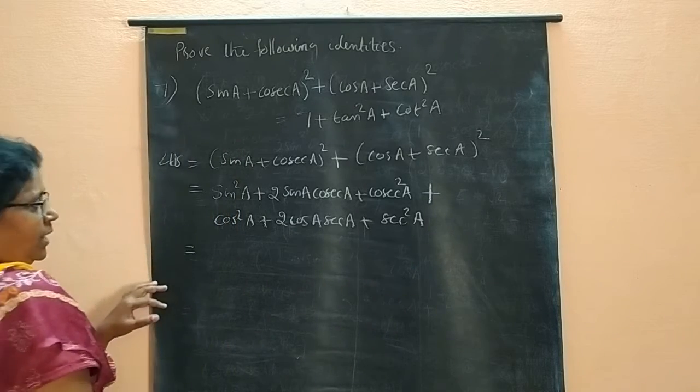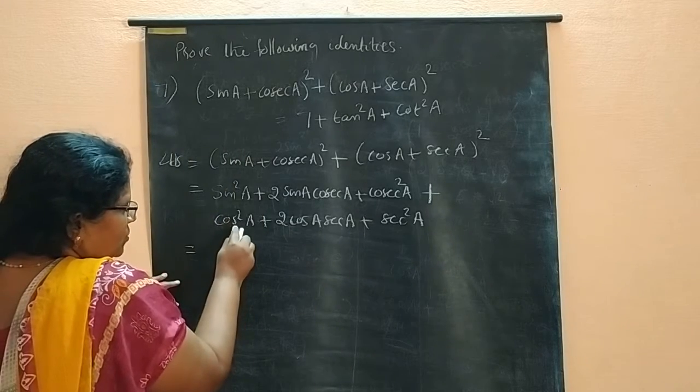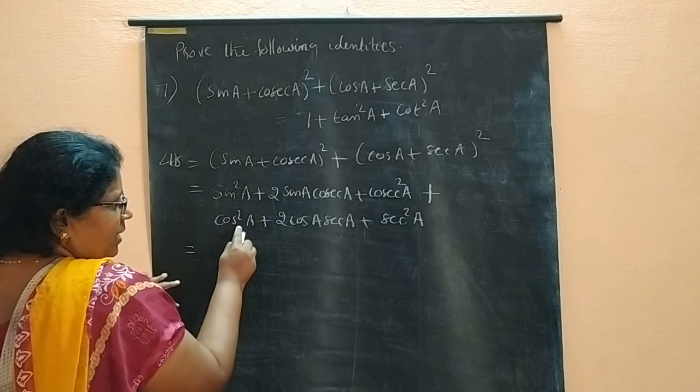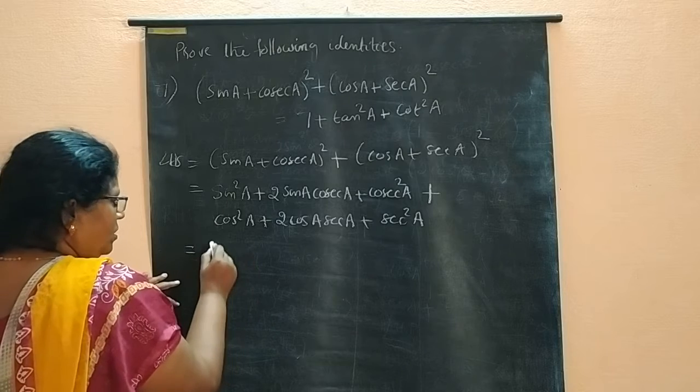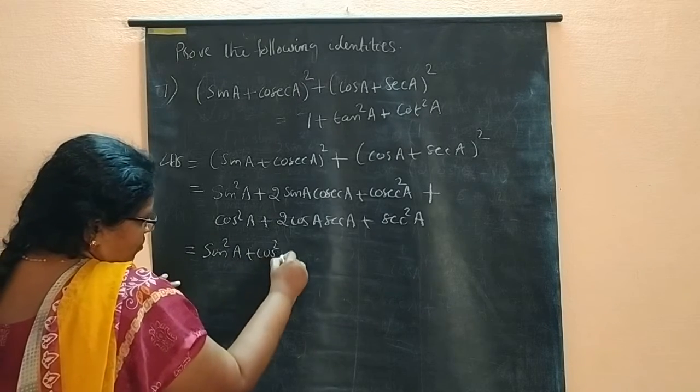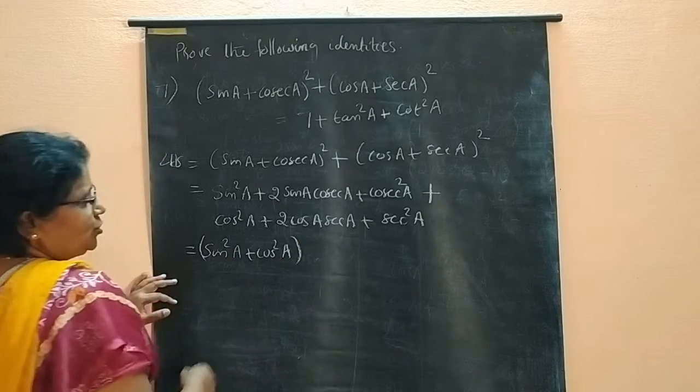Okay? Now, sin square A plus cos square A. It is first time that you do. Instead of sin square A plus cos square A, you write together. Sin square A plus cos square A, write together.